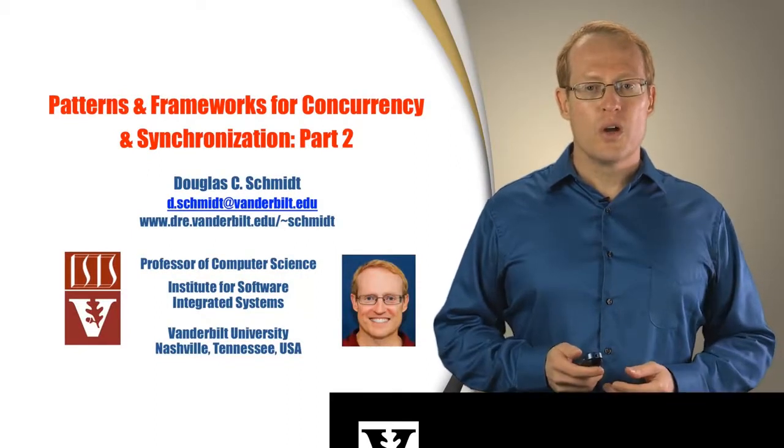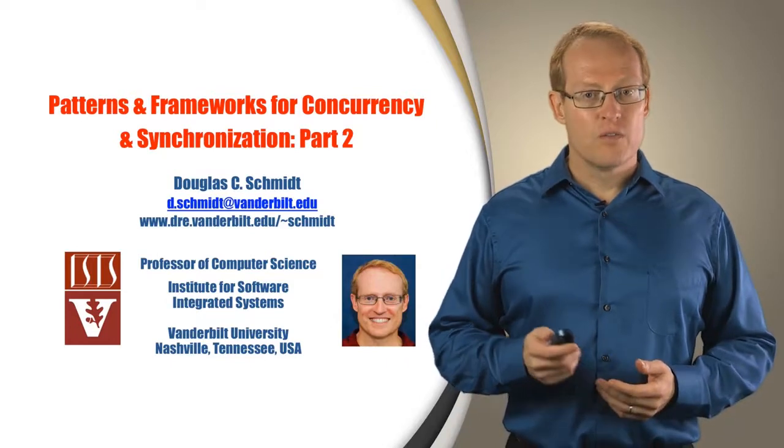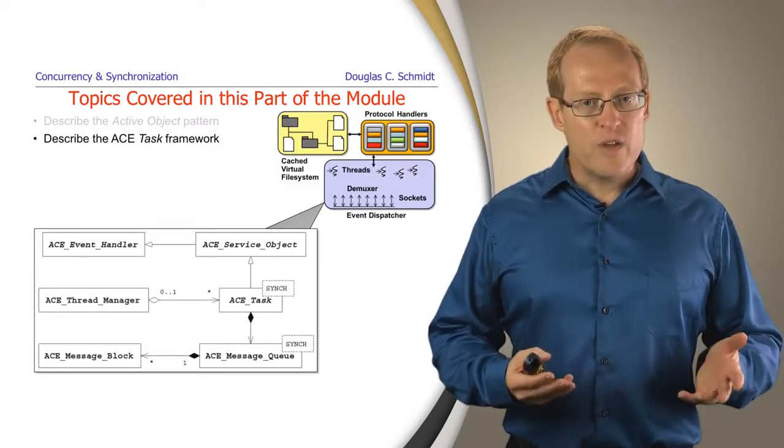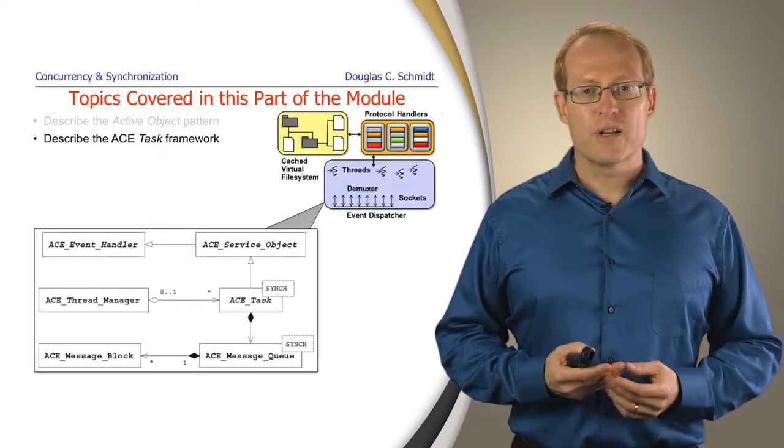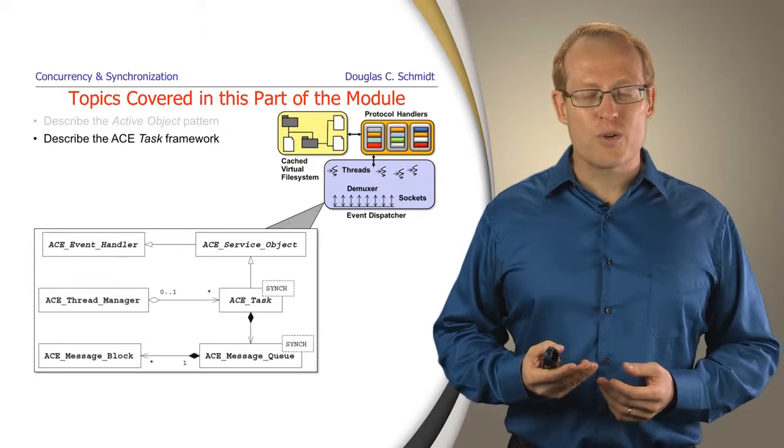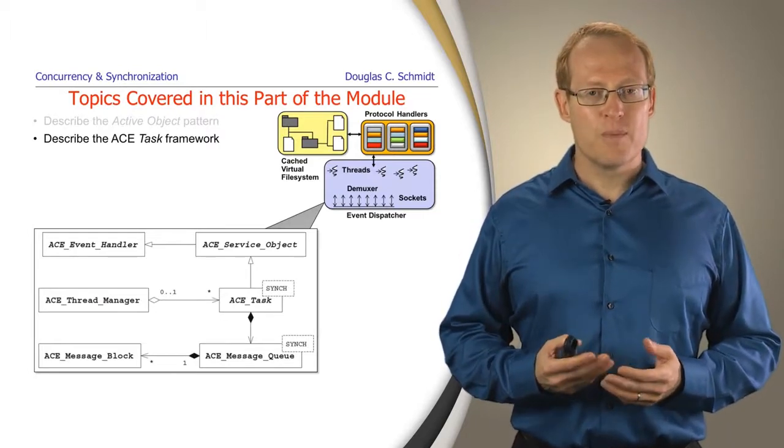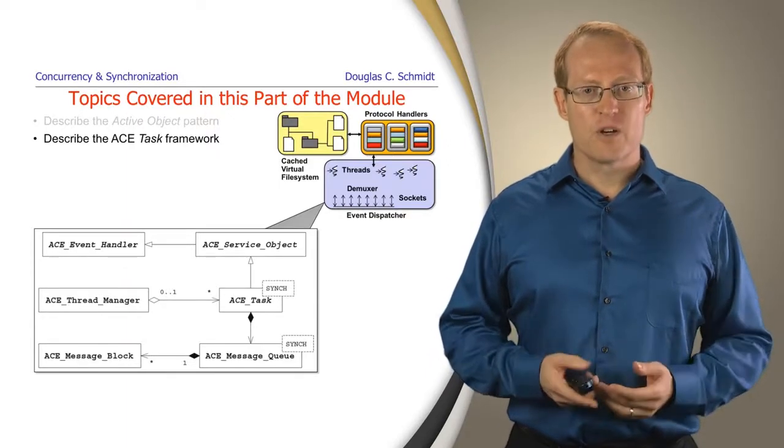Welcome to part two on the module discussing patterns and frameworks for concurrency and synchronization. In the previous part of this module we talked about the active object pattern. Now we're going to describe the ACE task framework which can be used to implement the active object pattern as well as other patterns for concurrency.